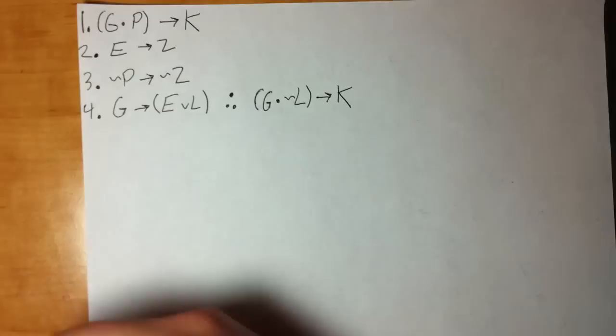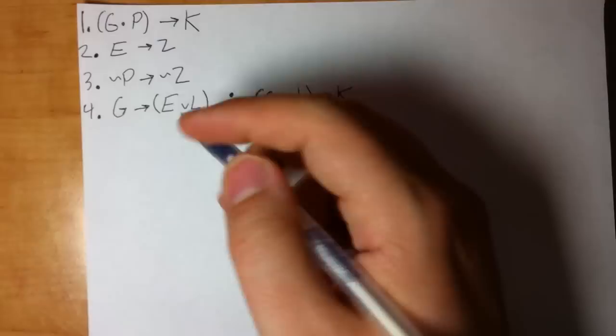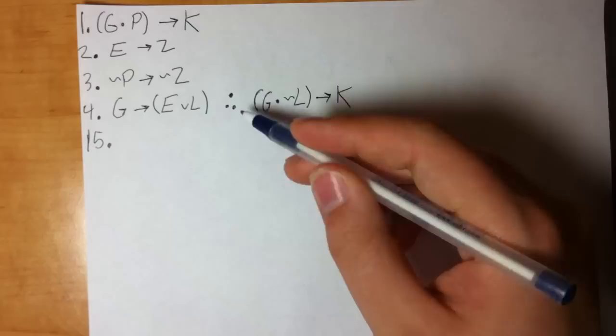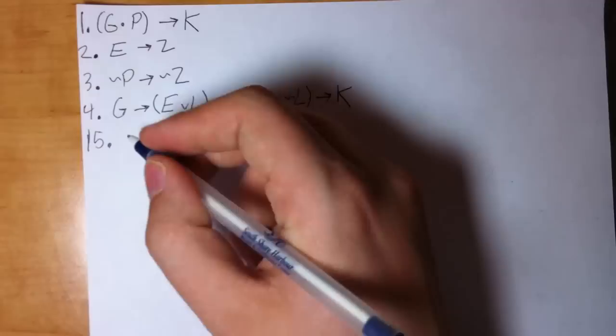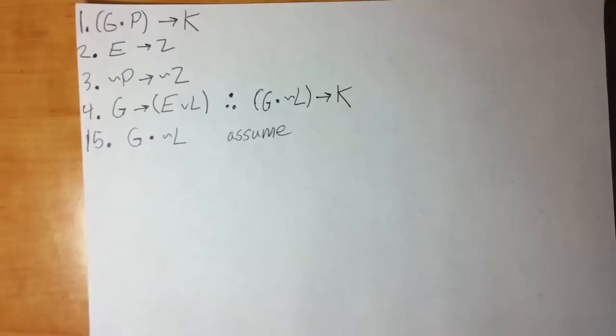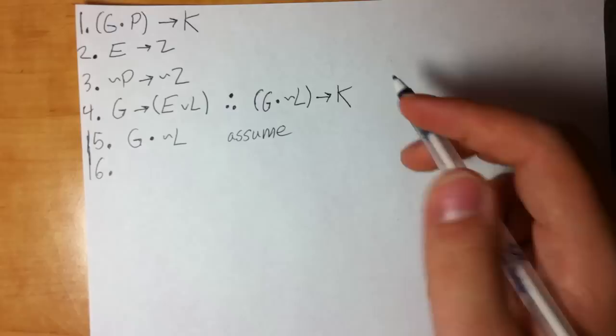Again, looking at the conclusion, the main connector is an arrow, so I'm automatically thinking CP. Some people get freaked out because the left side is bigger, but it doesn't matter — you still follow step one: assume the left side. So I assume G dot tilde L. Now that we have that to work with, step one is complete.